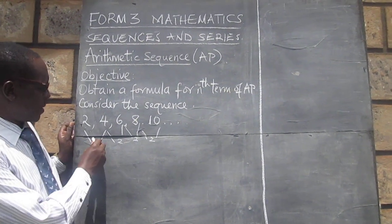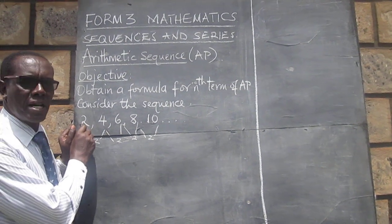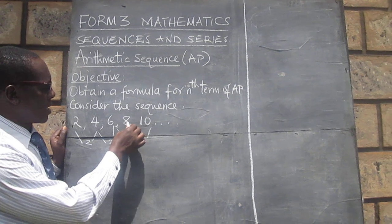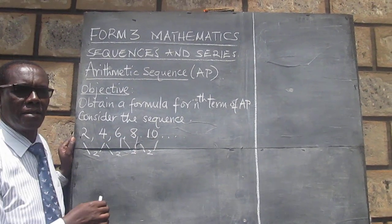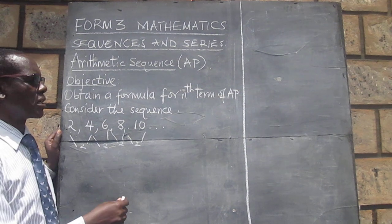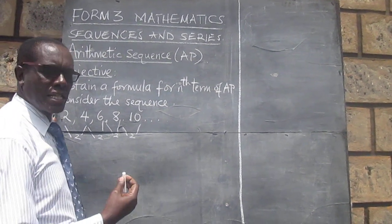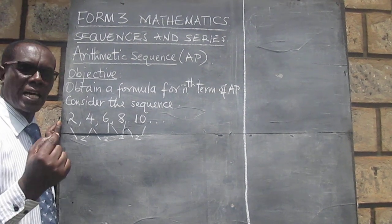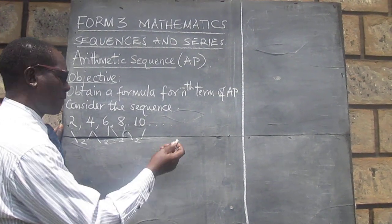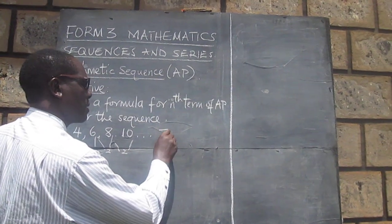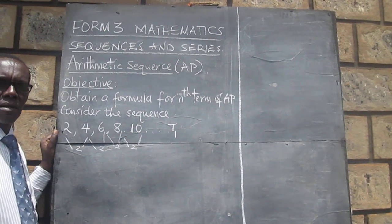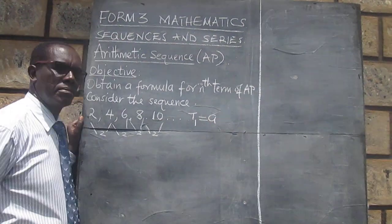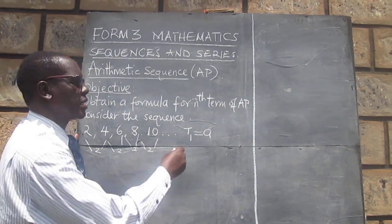Now, the difference which we are getting between the second term and the first, the third term and the second, the fourth term and the third, is called the common difference. So in this case, our first term, which we normally represent with the letter A, our first term, that is term number 1, our term number 1 can also be represented by the letter A, and in this case it is 2.